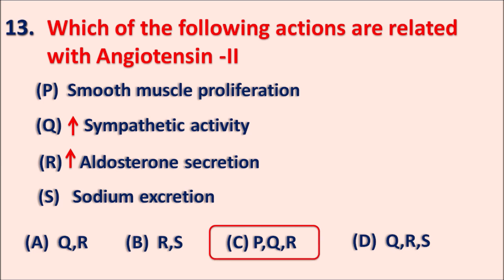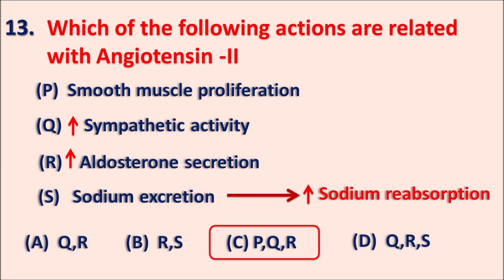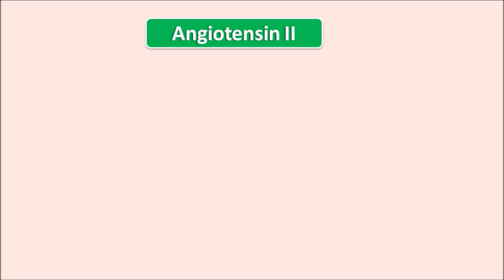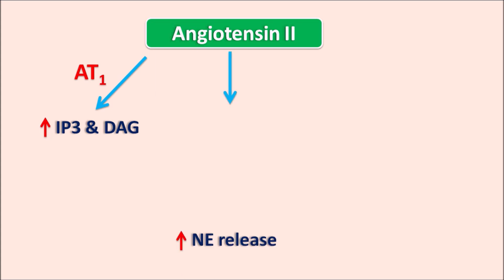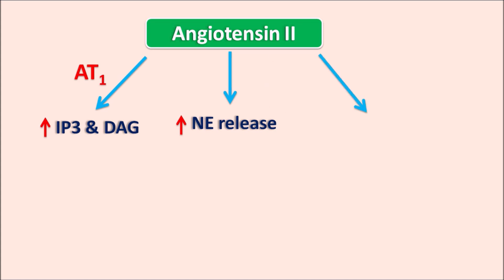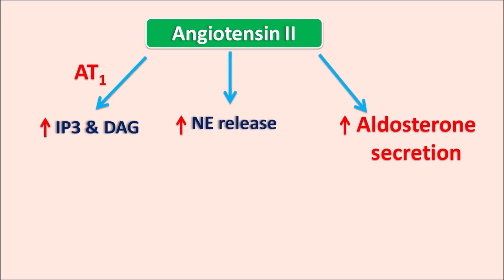Angiotensin II does not increase sodium excretion - it actually increases sodium reabsorption, resulting in retention of sodium within the body. Angiotensin II acts through the angiotensin II receptor subtype 1 (AT1 receptors) on vascular smooth muscle, increasing IP3 and diacylglycerol, thereby increasing intracellular calcium and producing vasoconstriction. Angiotensin II also increases norepinephrine release, increasing sympathetic activity, and increases aldosterone secretion, which is responsible for sodium reabsorption from the cortical tubules.